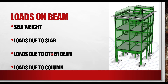Whenever a beam supports another beam, the secondary beam acts as a point load at the junction where it meets the primary beam. Similarly, whenever a column rests on a beam, the column acts as a point load or concentrated load on that beam. Let's take a couple of examples to understand this better.